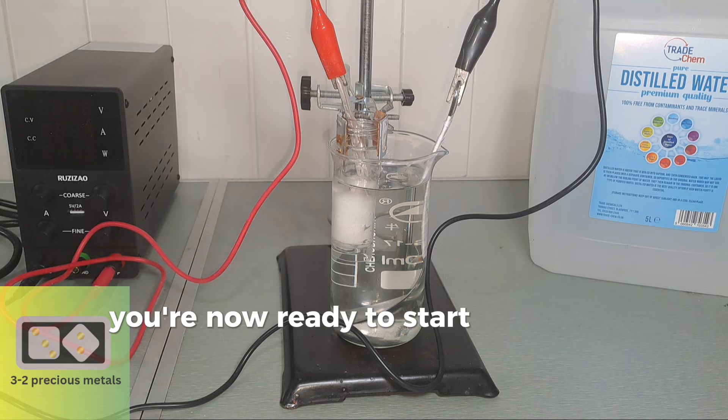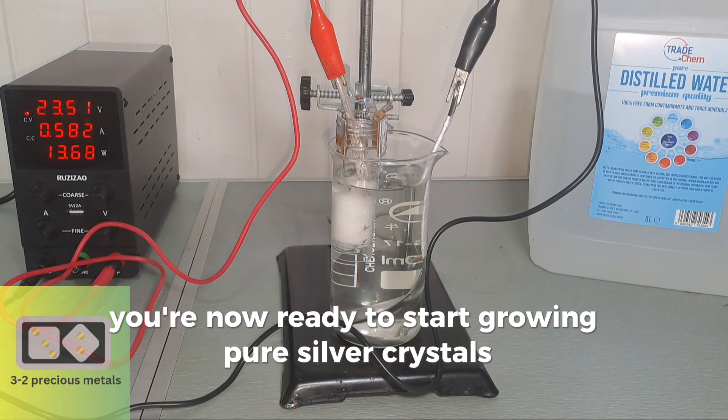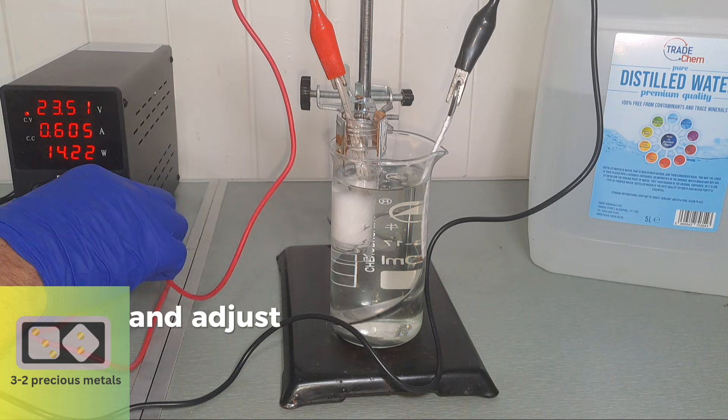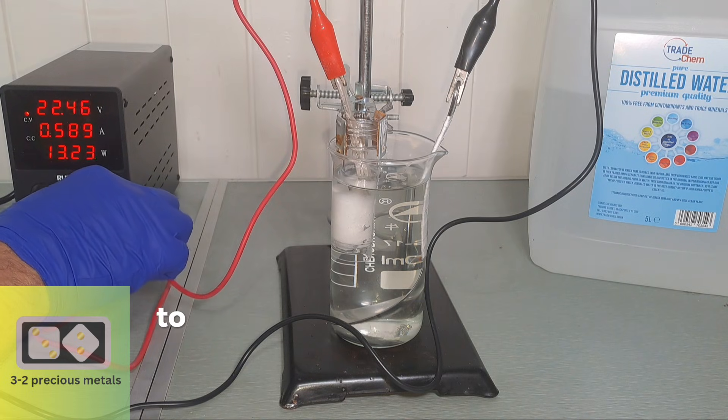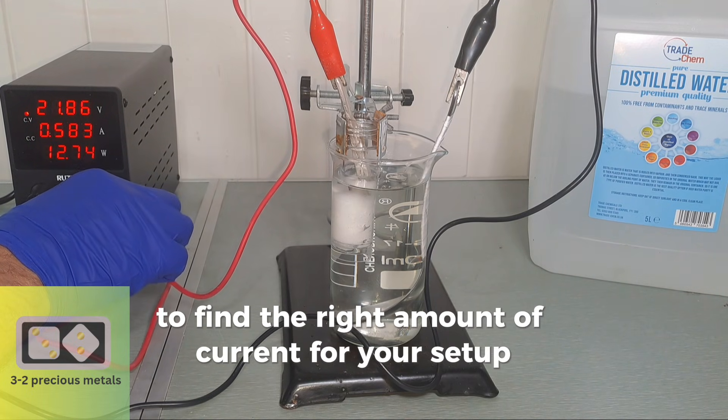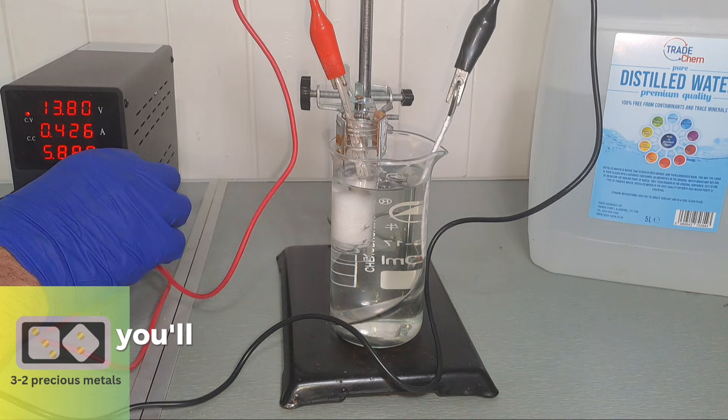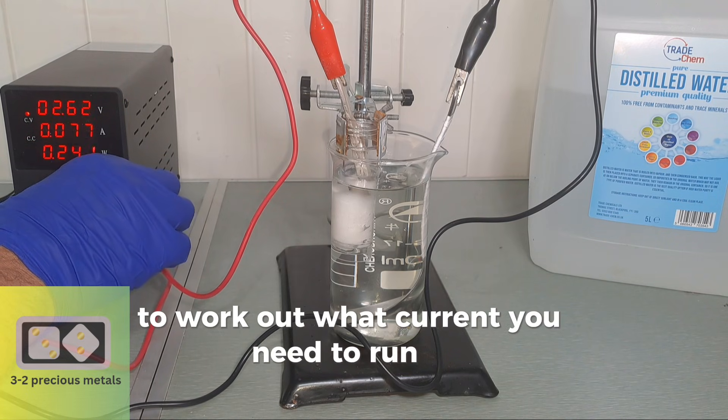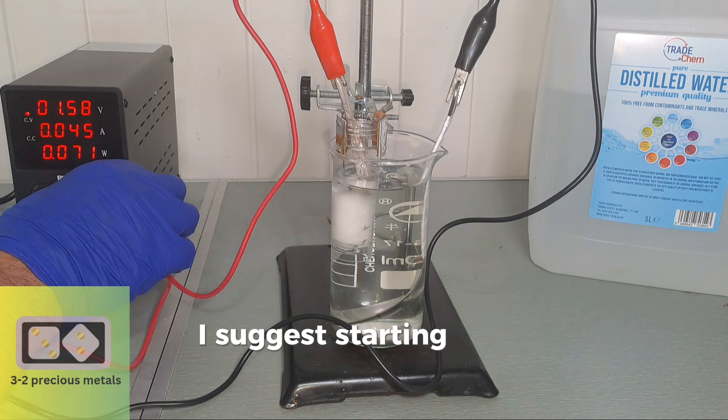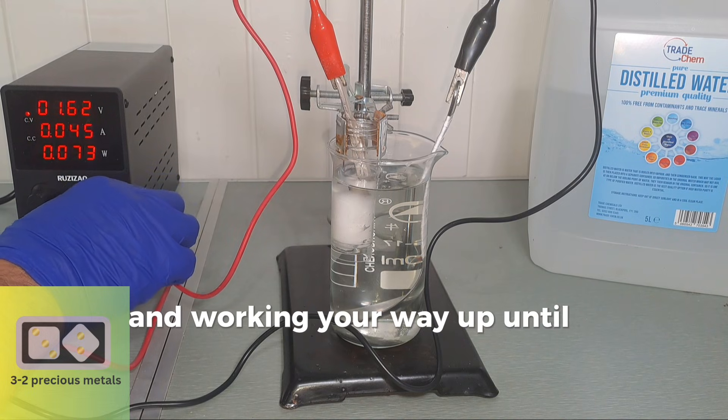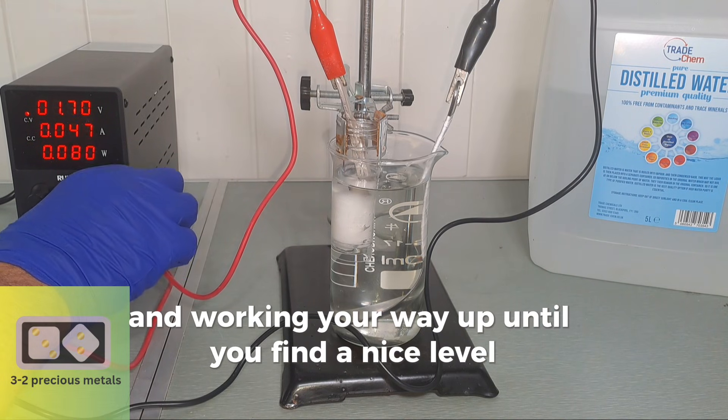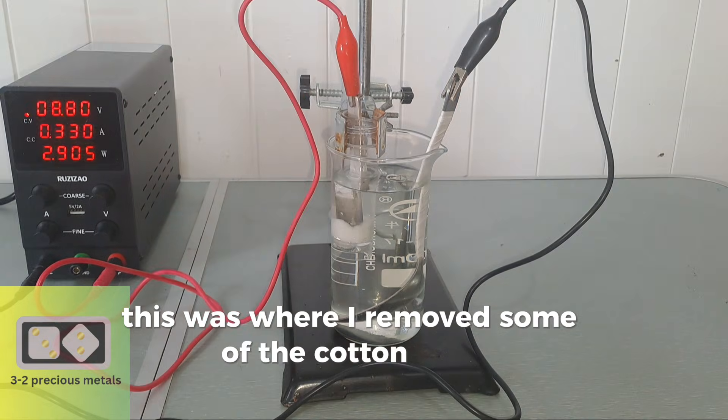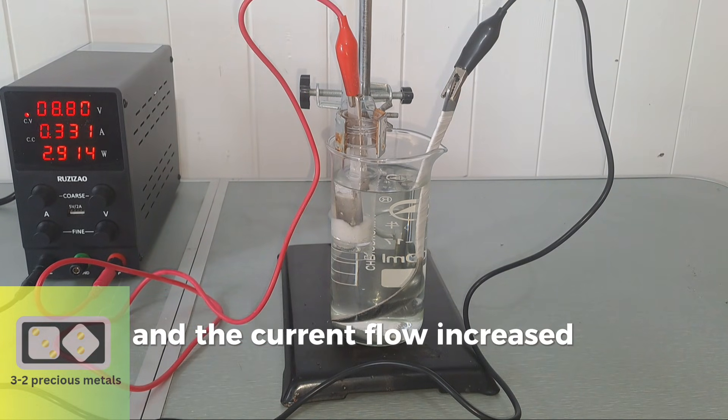You're now ready to start growing pure silver crystals. All that's left is to switch on the power supply and adjust the voltage and the current to find the right amount of current for your setup. You'll need a bit of trial and error to work out what current you need to run at. I suggest starting low and working your way up until you find a nice level.